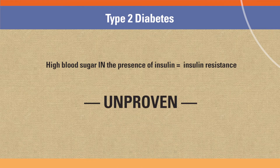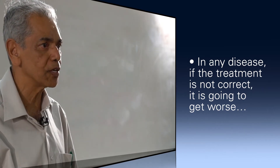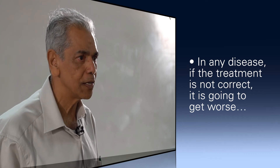Type 2 diabetes is supposed to be a progressive disease. Why is it progressive? Not because more cells are becoming resistant, not because the cells are becoming resistant to more hormones, but because the complications are getting worse. Is it possible it is progressive because the treatment is wrong? In any disease, if the treatment is not correct, it is going to get worse. So that is the question I am asking.